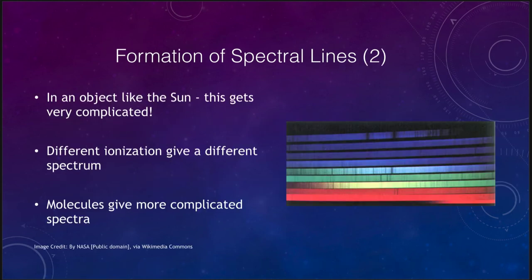However, when we look at an actual object like the sun, it becomes significantly more complicated because the sun is made up of dozens of different elements. Hydrogen and helium may be the two most prominent ones, but we see all of those. We also have to note that different ionizations give different spectrum. So things like helium and helium that's been ionized do not give you the same spectrum. They give you a completely different one.